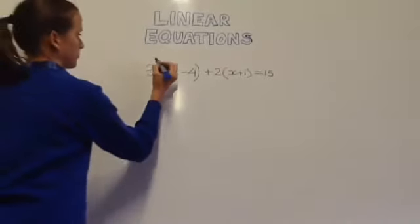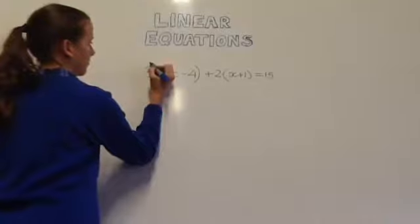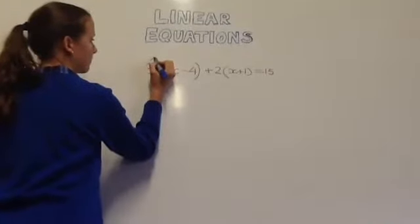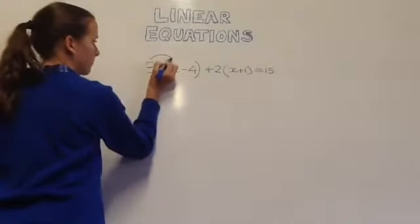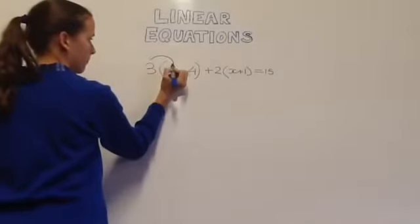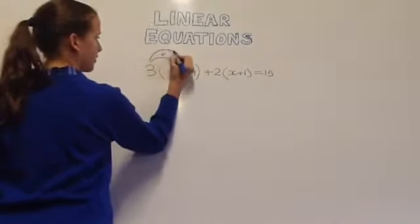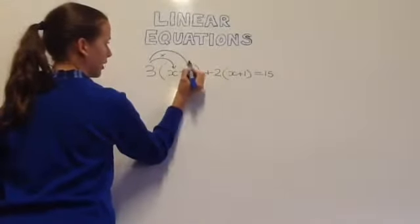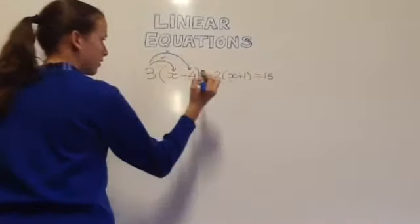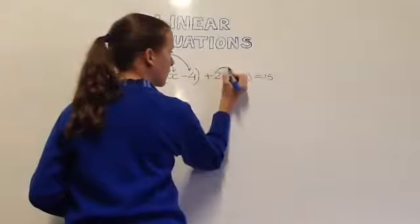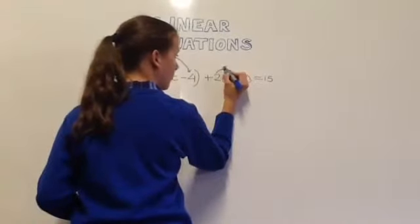The next sum is 3 brackets x minus 4 bracket plus 2 bracket x plus 1 bracket equals 15. Firstly you have to do the distributive law which means you times 3 and x, 3 and minus 4, 2 and x and 2 and 1.